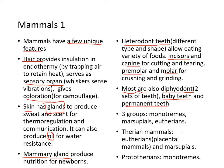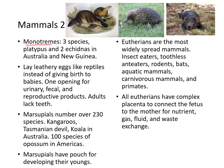There are three groups of mammals: monotremes, marsupials, and eutherians. Of the monotremes, there are three species — the platypus and two echidnas — found only in Australia and New Guinea. They lay leathery eggs like reptiles instead of giving birth to live babies. Adults lack teeth and have only one opening for urinary, fecal, and reproductive products. Marsupials number about 230 species — kangaroos, Tasmanian devils, koalas, and opossums — and they all have a pouch for developing their young.